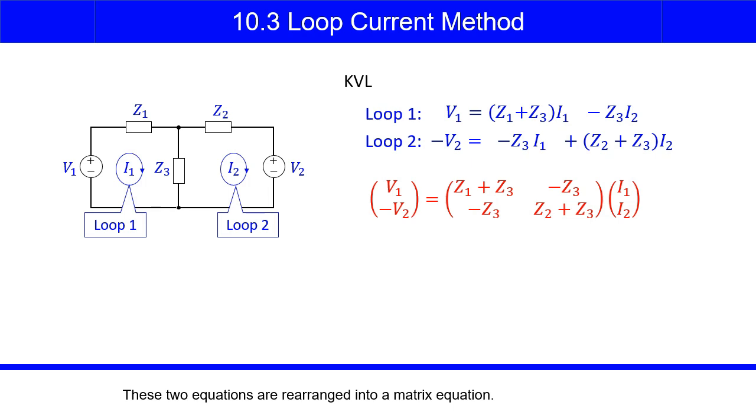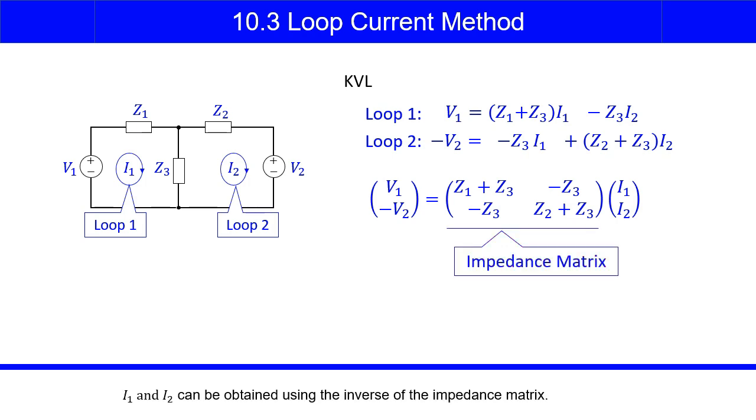These two equations are rearranged into a matrix equation. We call this matrix the impedance matrix. I1 and I2 can be obtained using the inverse of the impedance matrix.